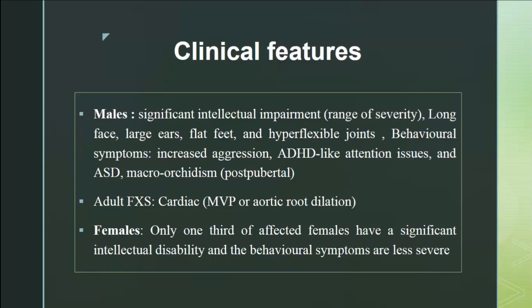Males can have a range of severity including significant intellectual impairment and dysmorphism, though not seen in everyone. Any male with intellectual disability should have Fragile X as a differential. They also have hyperflexible joints and behavioral symptoms — mostly autism spectrum disorder and attention deficit disorder. Adults can develop cardiac issues like mitral valve prolapse or aortic root dilatation. Females — only about one third have significant intellectual disability, and behavioral symptoms are less severe.